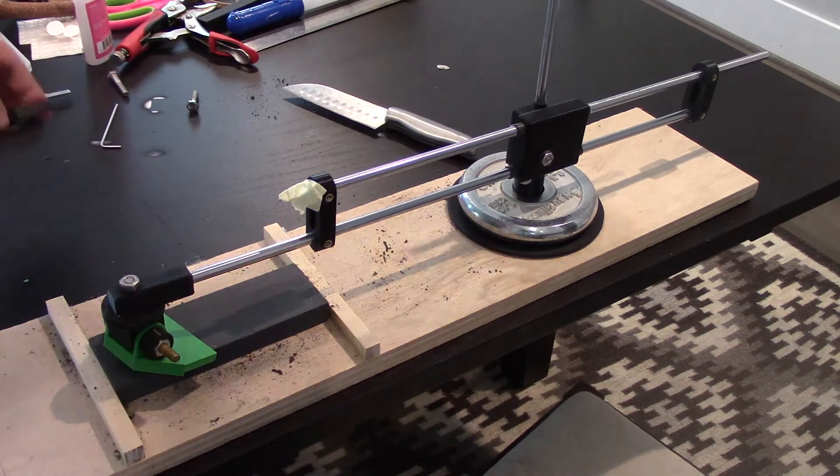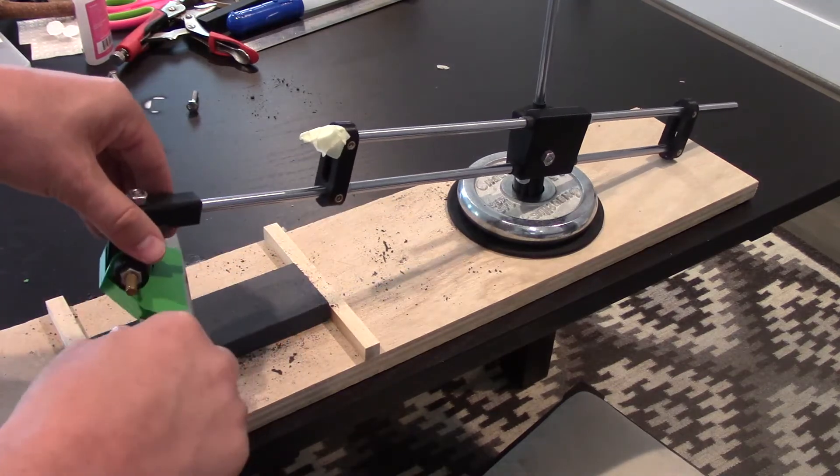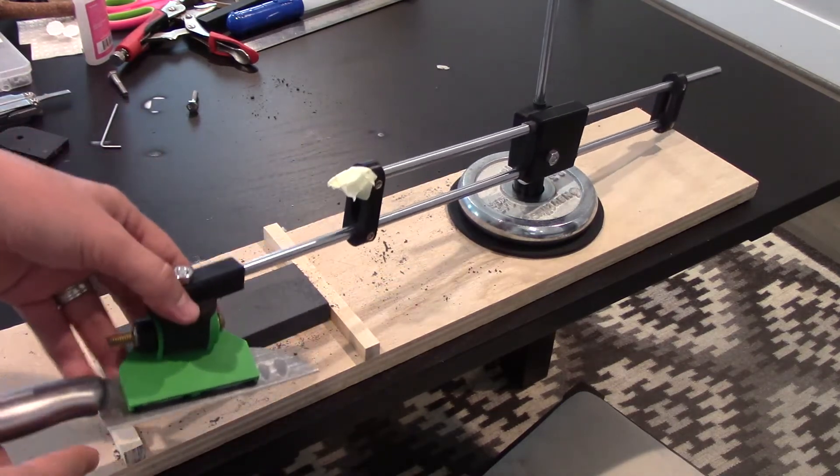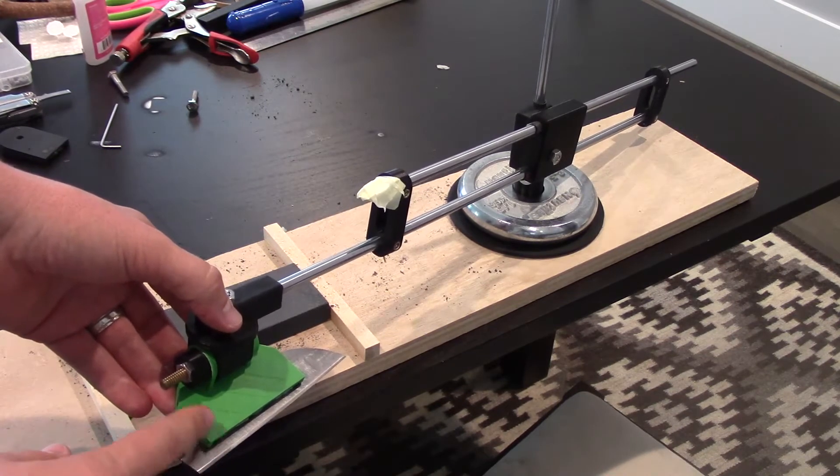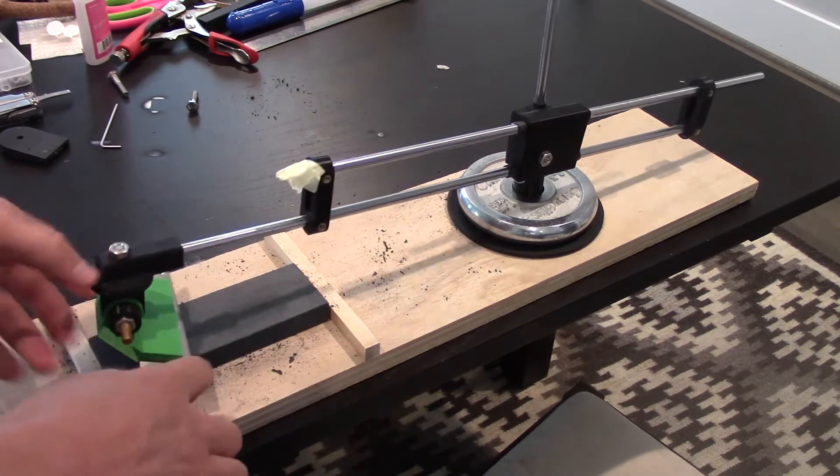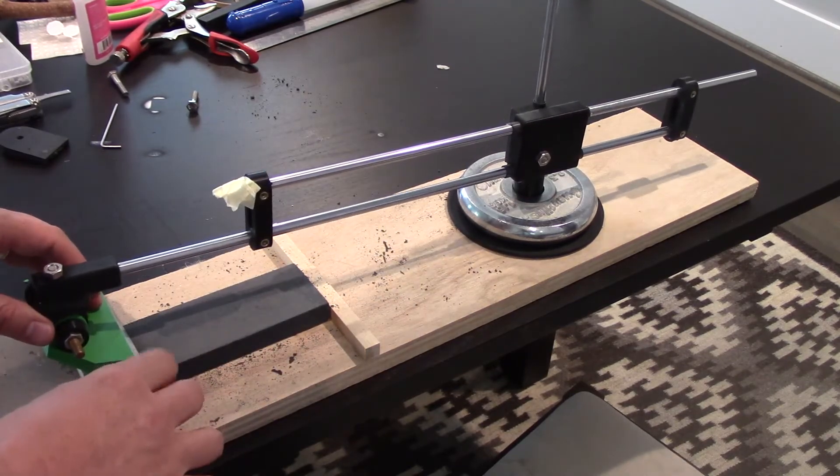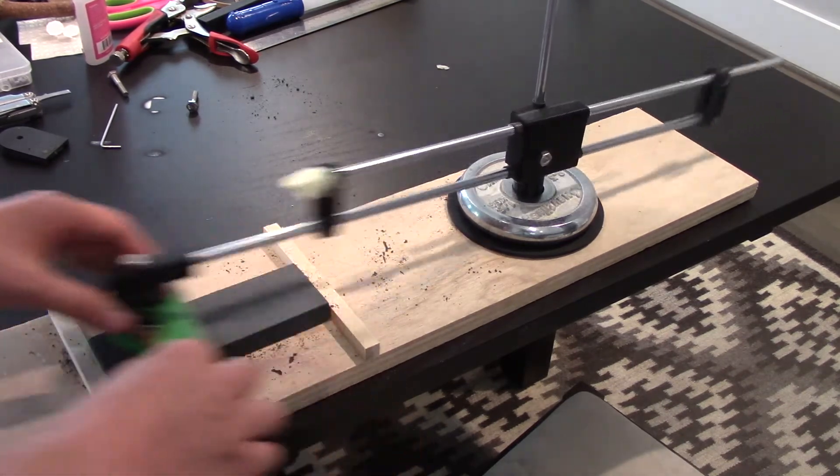Now the knife is very secure on there. One limitation to it right now is it requires about a minimum one-inch blade, but I've been very happy with how well it works. It feels very natural.